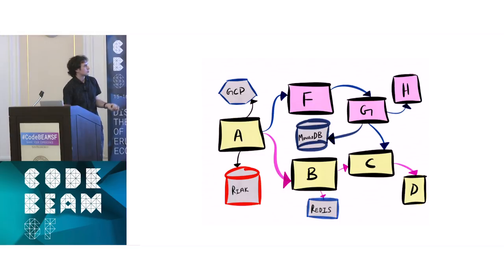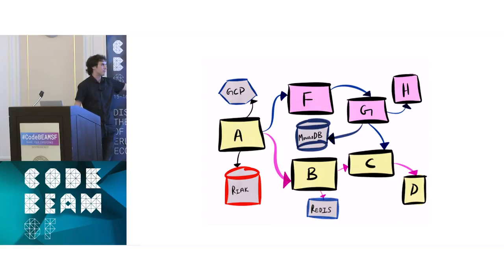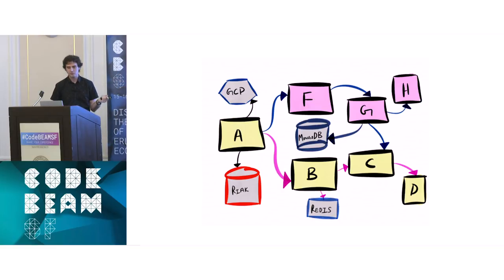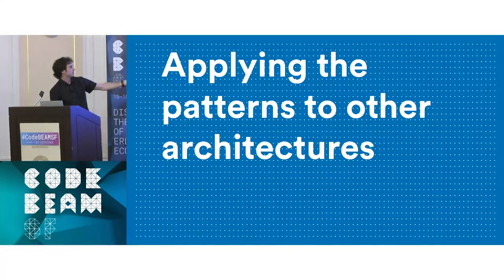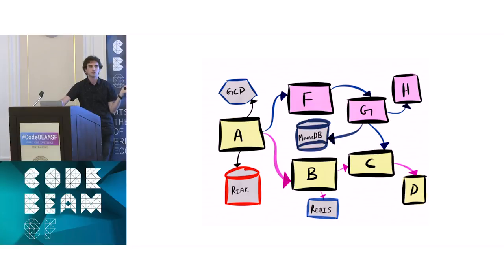We can even apply that to other architectures. Looking at microservice architecture diagrams — if you flip it 90 degrees, it's really damn close to a supervision tree where you have that kind of flow of what depends on what. When you start to apply these patterns, it gets interesting about how you can encode the failures of the broad system into a local one.